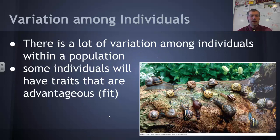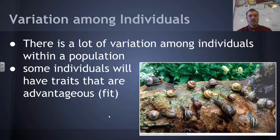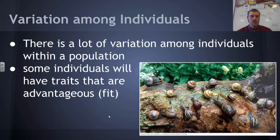Because so many individuals are being produced, all of those individuals are going to be slightly different. As you can see in the picture — these snails all have a little bit different sizes and colors. Some individuals are going to have traits that are advantageous — we would call that being fit. Those organisms are more fit than others.